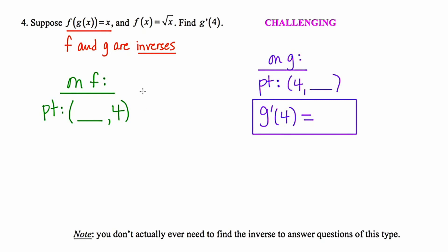The graph of f is defined by √x, and we want to know when that output is going to be 4. To figure this out, I'm going to square both sides and I get x = 16. So on the graph of f, when x = 16, the output is going to be 4.